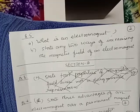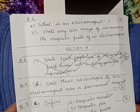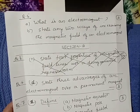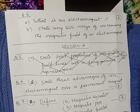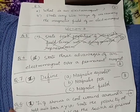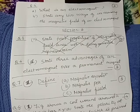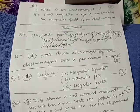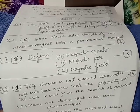Section B. Question number 6: State three advantages of an electromagnet over a permanent magnet. Allotment: 3 marks. Question number 7: Define the following: magnetic equator, magnetic pole, magnetic field.